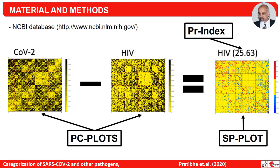We also quantified this difference by summing all the red or blue dots. This is essentially a distance of different viruses from SARS-CoV-2, which we name the proximity index from coronavirus. For HIV, this proximity index value is 25.63, obtained through the subtraction plots.